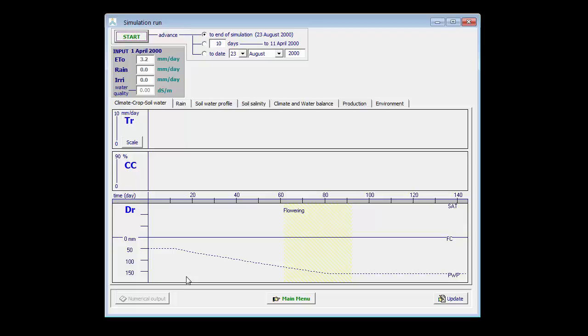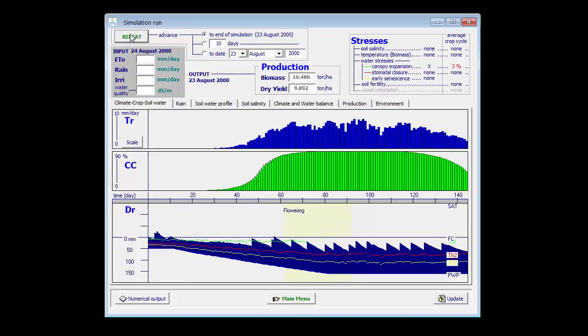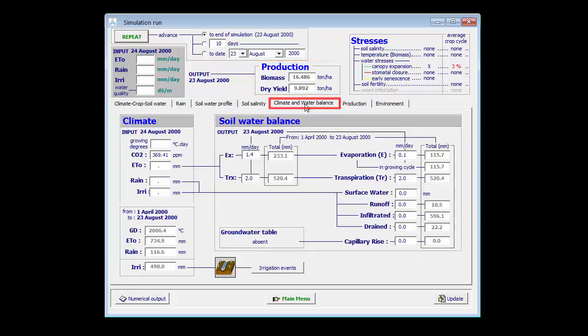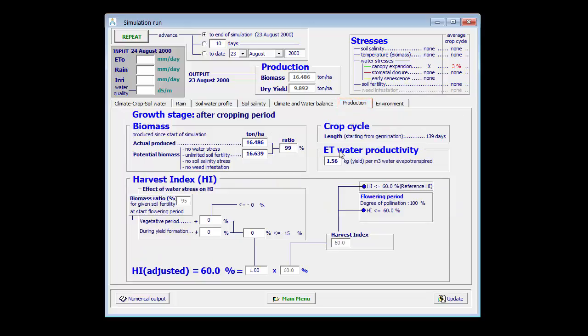Let's run without any mulches. I can see that the production is high, 9.9 tons. The amount of water which was applied by irrigation is 490. But 115.7 mm of water was lost by soil evaporation. The water productivity is high as well, 1.56.